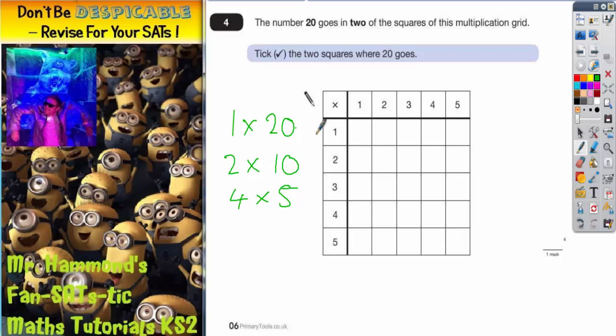Obviously 1 and 20 won't both appear on this grid. 2 and 10 don't both appear on the grid, but 4 times 5 will appear on this grid. So 4 times 5 is that box which we can tick.